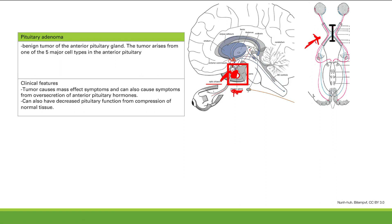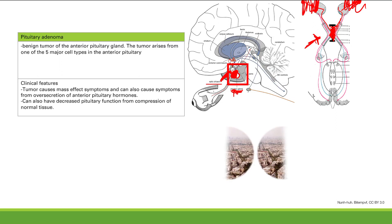The optic chiasm compression impedes crossing of the visual tracts. Light from the outside visual field comes in and normally crosses at the chiasm, but if you have a mass compressing it, that crossing doesn't happen. So you don't see the outside half of the world on either side — all you see is the inside half. That's bitemporal hemianopsia, classic for a pituitary adenoma compressing the optic chiasm.